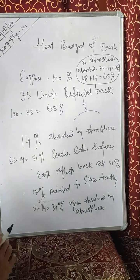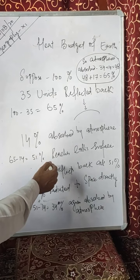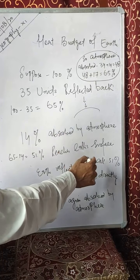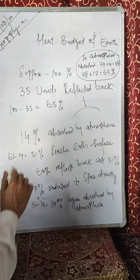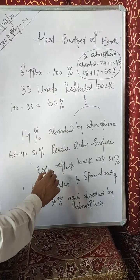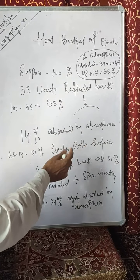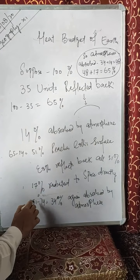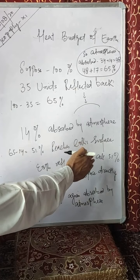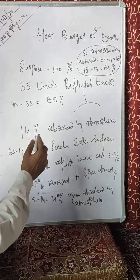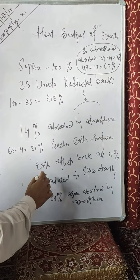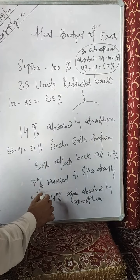Now, this 51% that reaches the earth's surface is reflected back. Out of the 51%, 17% is radiated to space directly. Then there is 51 minus 17, which is 34%, and this 34% is absorbed by the atmosphere.